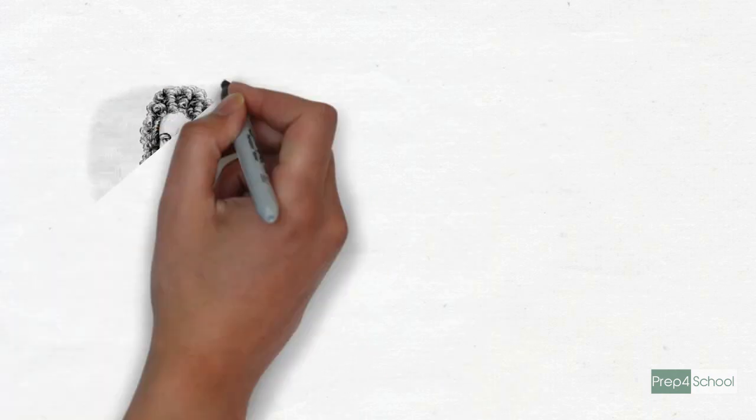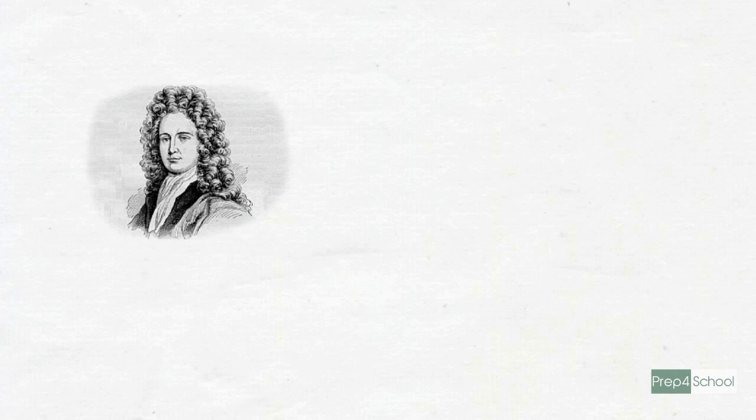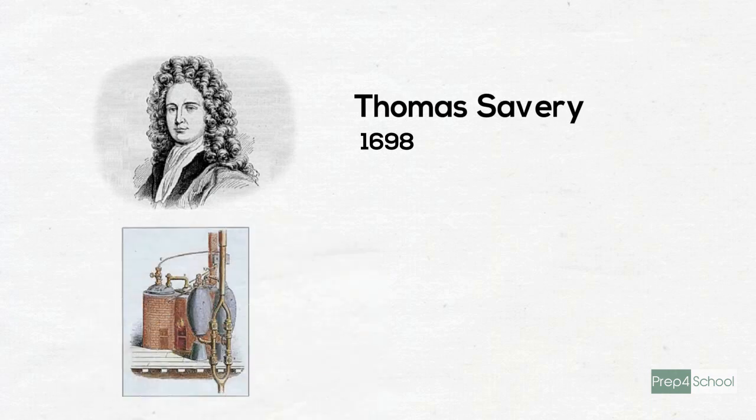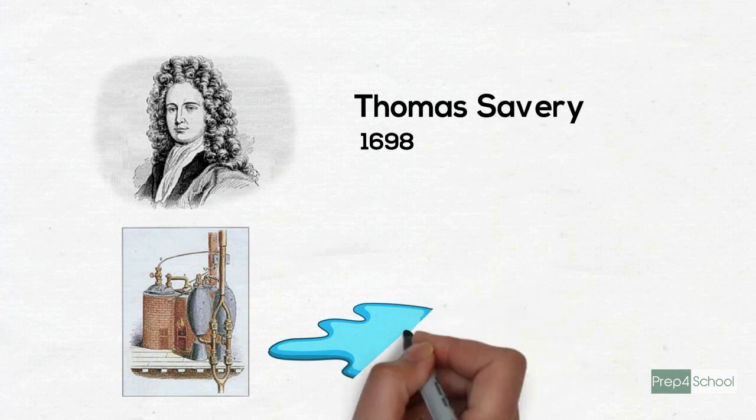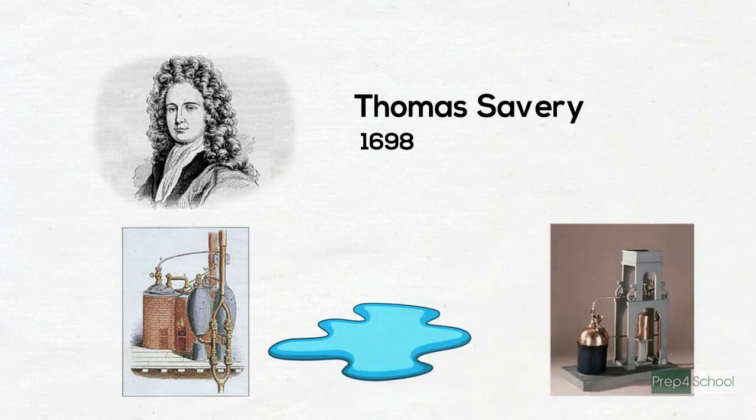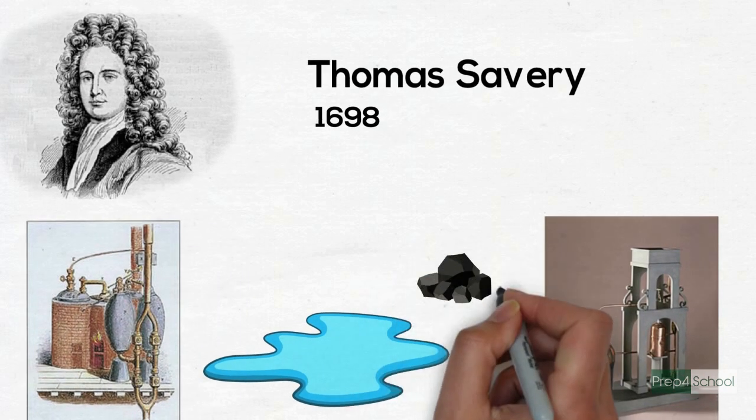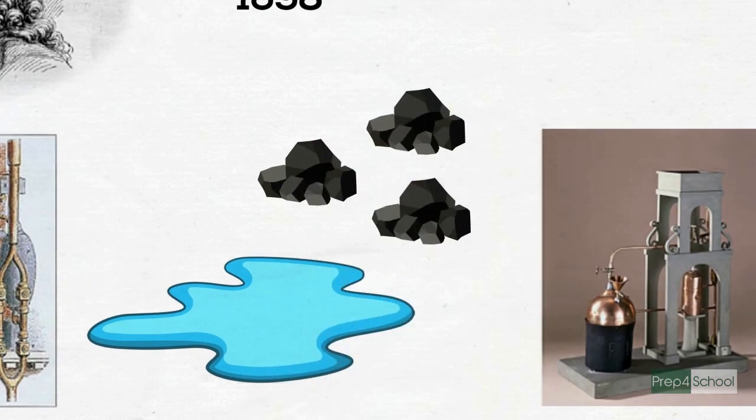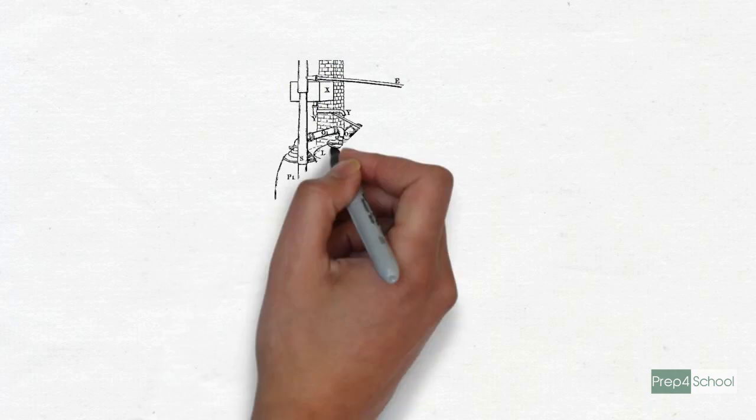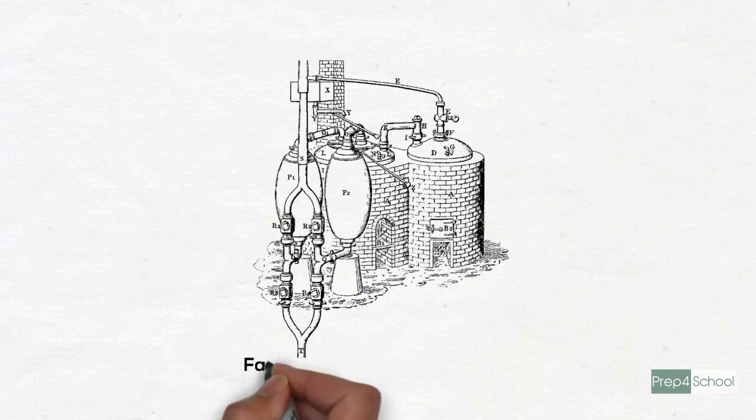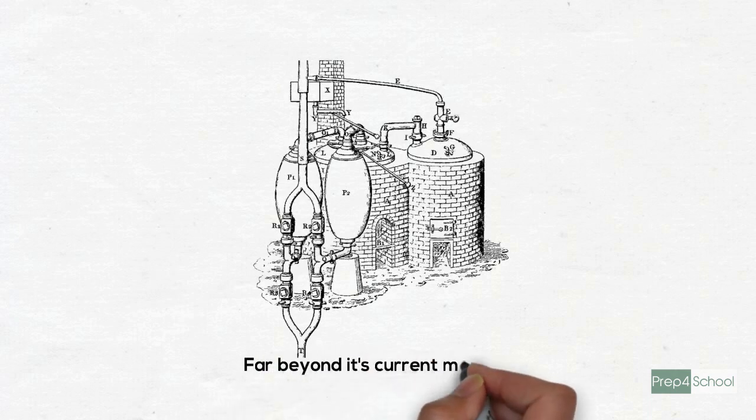The first crude steam-powered machine was built by Thomas Savery of England in 1698. Savery built his machine to help pump water out of coal mines. This machine was so simple that it had no moving parts. It also used up lots of coal just to pump a small quantity of water. To say it was a steam engine would be to stretch the words steam engine far beyond their current meaning.